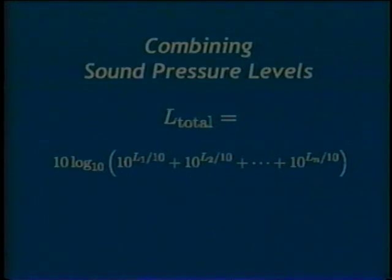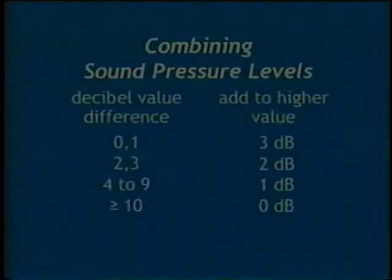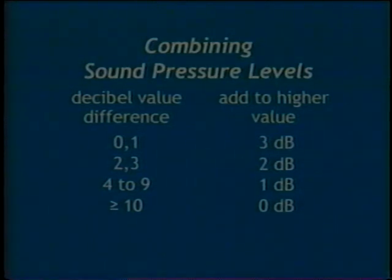For applications requiring only integer decibel accuracy, it is also possible to apply some simple steps to calculate an approximate total sound pressure level. First, find the decibel difference between two sound pressure levels. Then add an adjustment factor to the higher of the two. If the decibel difference is 0 or 1, add 3 dB. For 2 or 3, add 2 dB. For between 4 and 9, add 1 dB. If the difference is 10 dB or greater, you can safely ignore the lower level source — the higher level source is said to mask the lower one.